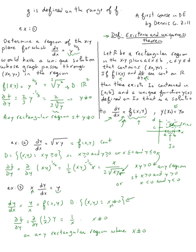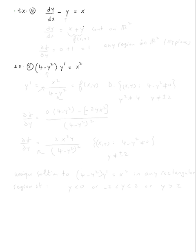Example four: dy/dx − y = x. We rearrange to get f(x, y) = x + y on the right side. This is a polynomial, so it's continuous on R². The partial of f with respect to y is 1, also continuous everywhere. Therefore, the answer is: any region in R² — on the entire xy-plane.